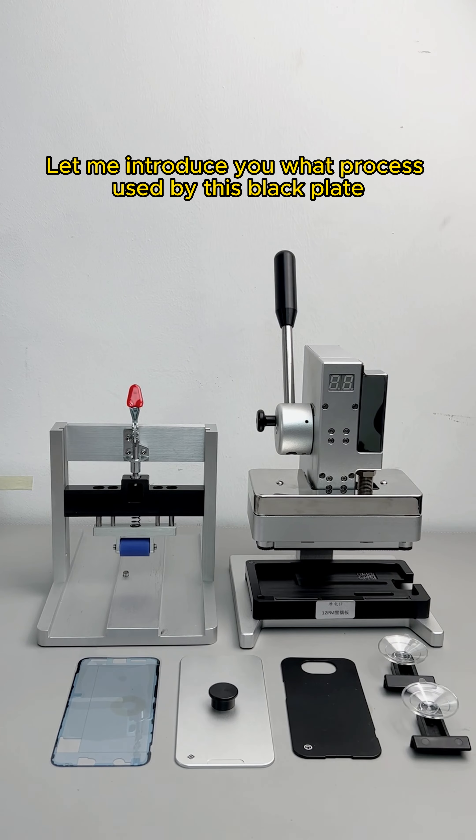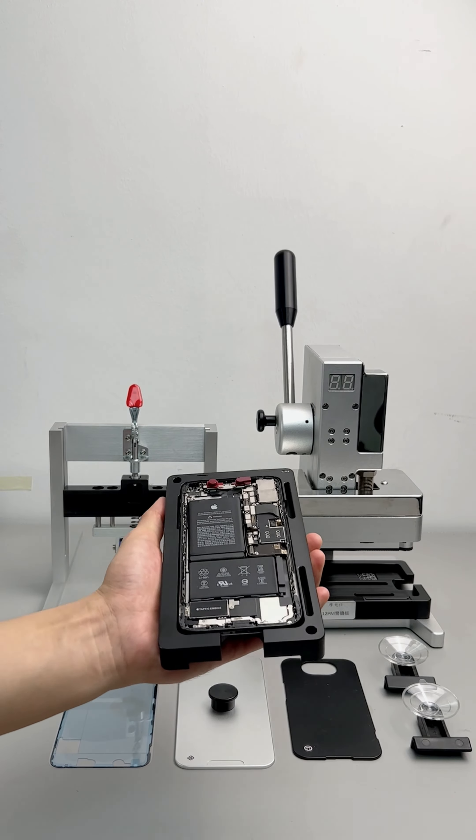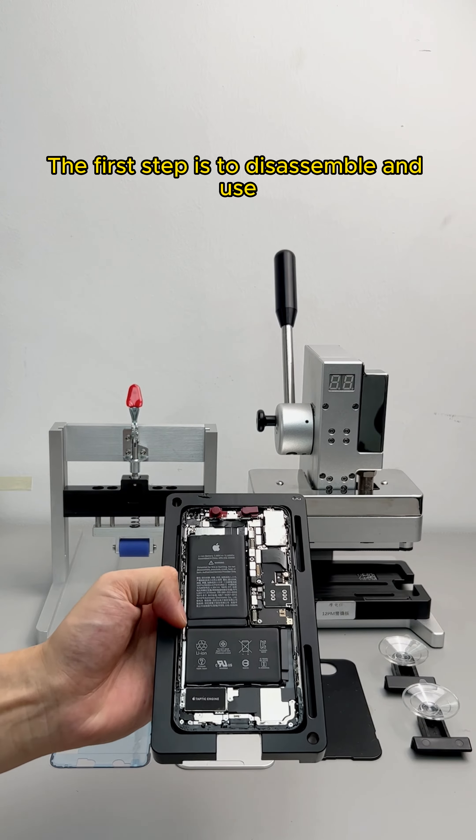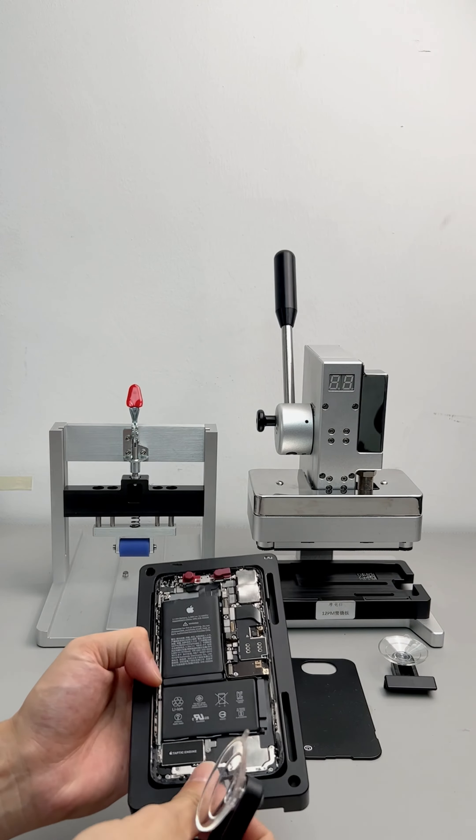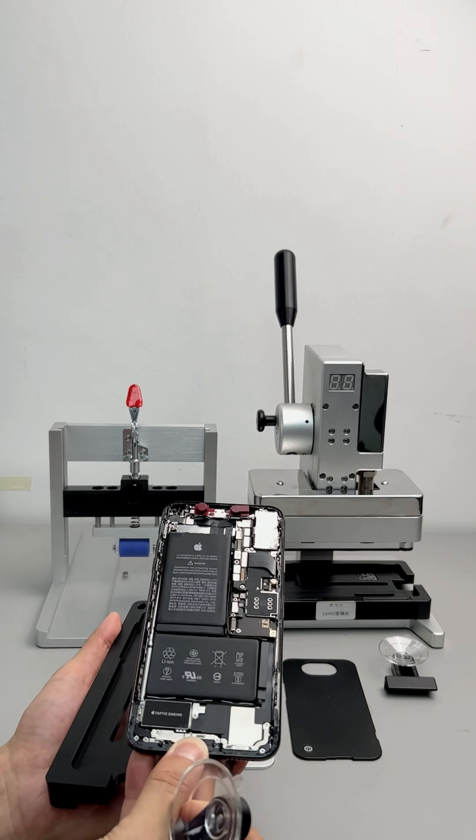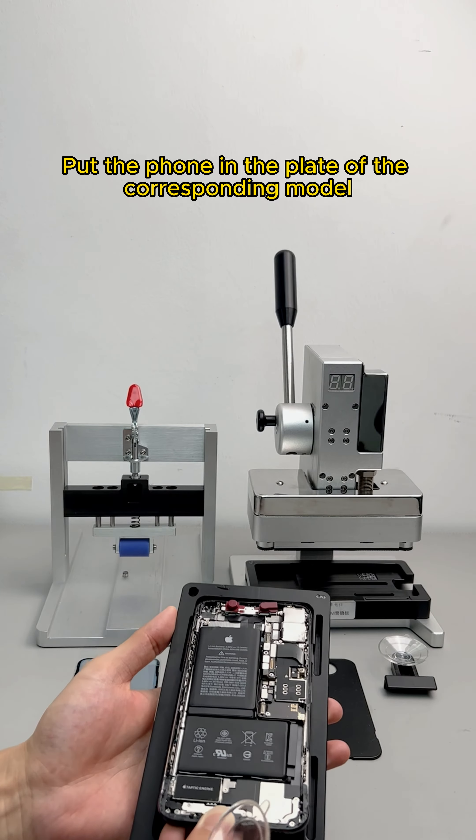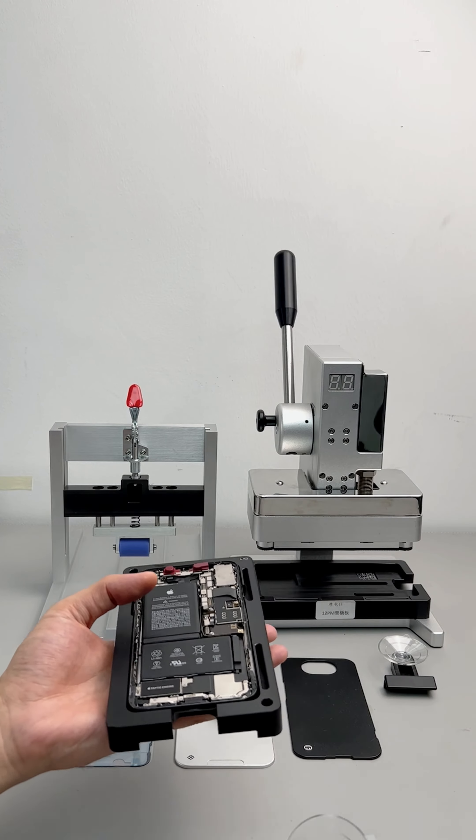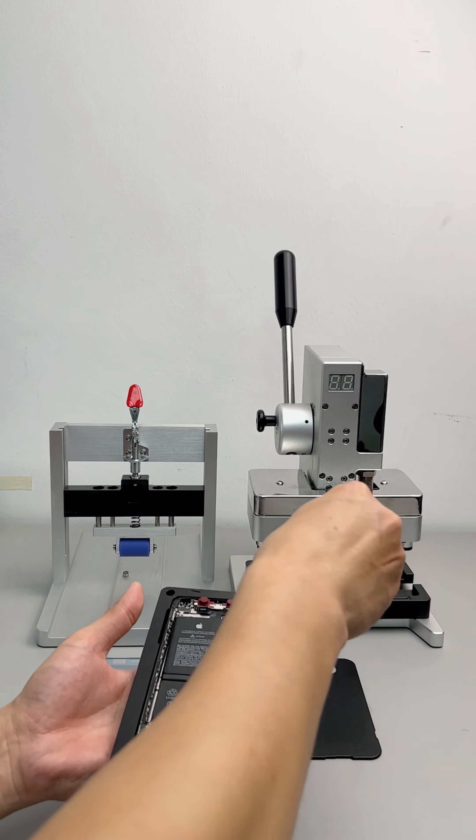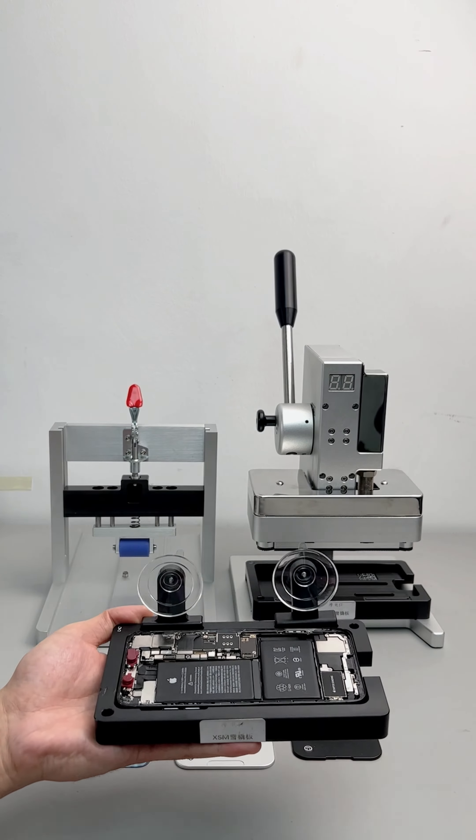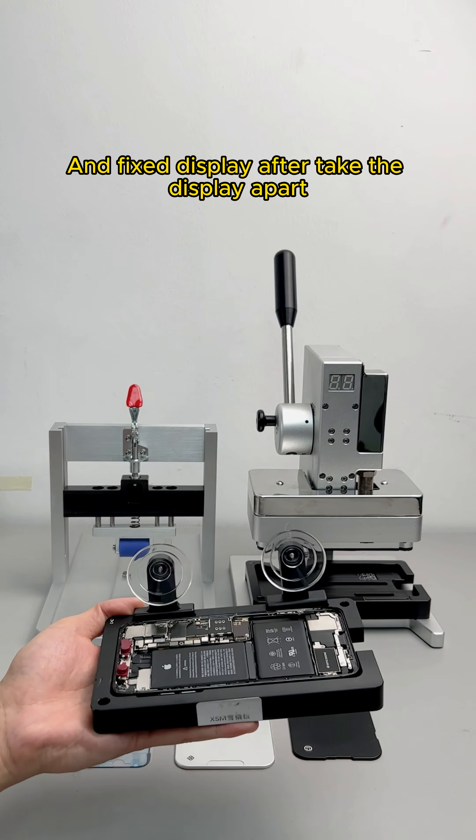Let me introduce you to the process used for this black plate. The first step is disassembly. Put the phone in the plate of the corresponding model. These two suckers are on the side and fix the display after taking it apart.